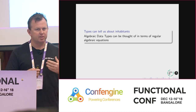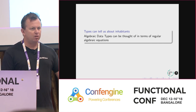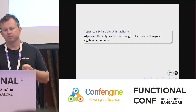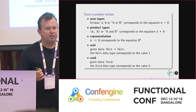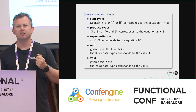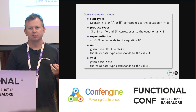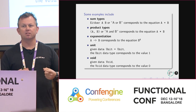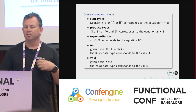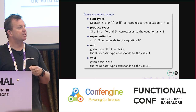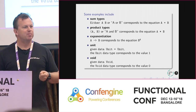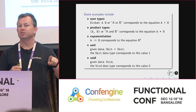Types can tell us about what are called inhabitants — values of that type. For example, Boolean has two inhabitants: true and false. I'm going to do a little bit of algebra. We have sum types, like A or B, which corresponds to addition — it's the same as A plus B when we count inhabitants. Or we can have A and B — a product type — which is multiplication, so inhabitants are A multiplied by B. And a function from A to B has B to the power of A inhabitants.